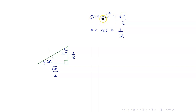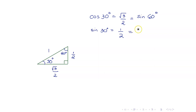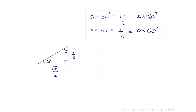You can also use the complementary angle theorem. Cosine of 30 is the same as sine of its complement, sine of 60. And this equals cosine of 60. Always remember this.